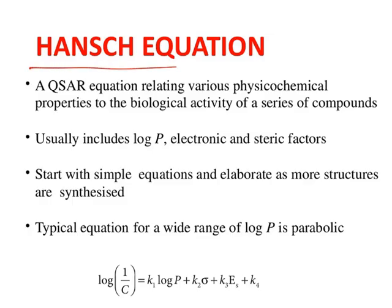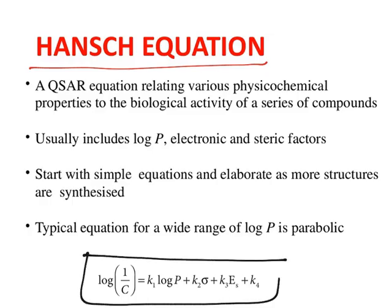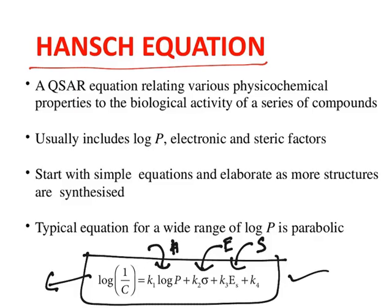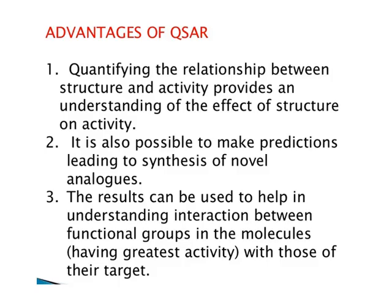Finally, there is the Hansch equation, which puts all of them together in a single equation. Biological activity can be related to log P values (hydrophobic parameters), sigma values (electronic parameters), and Es values (steric parameters). This equation tells us how every parameter can affect biological activity.